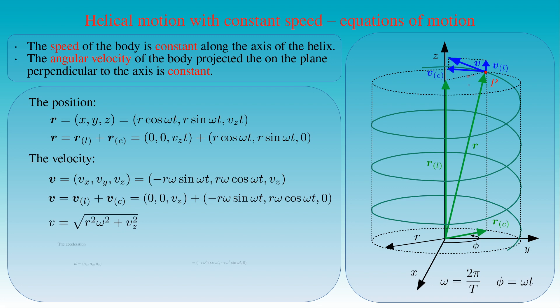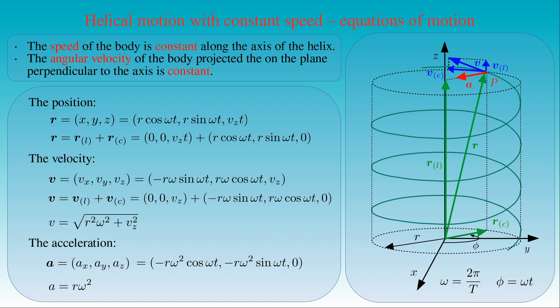The acceleration of the body is the derivative of its velocity. Its x-component is minus R times omega squared times cosine of omega t, and its y-component is minus R times omega squared times sine of omega t. Since the motion is uniform in the direction of the z-axis, the z-component of the acceleration vanishes. The magnitude of the acceleration is equal to R times omega squared. The acceleration vector remains horizontal during the motion and always points towards the axis of the helix.